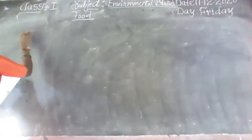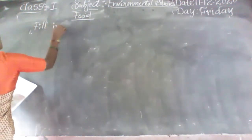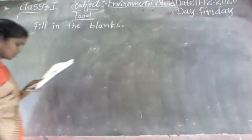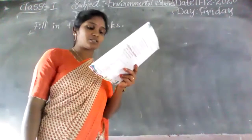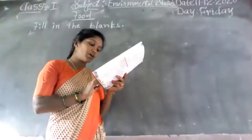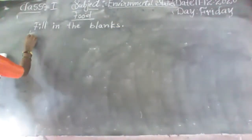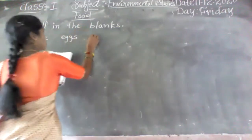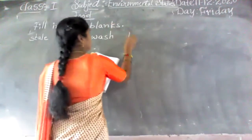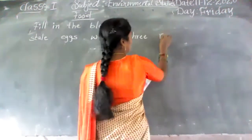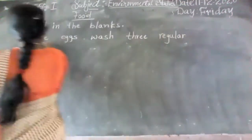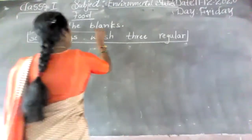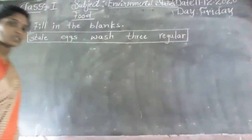First one — fill in the blanks. Here, words are given in a box: stale, eggs, wash, tree, and regular. These five words are given in the box, so use these words to fill in the blanks.